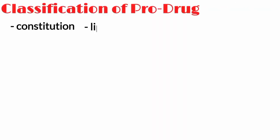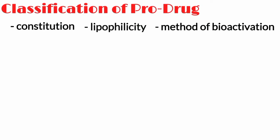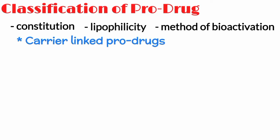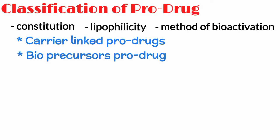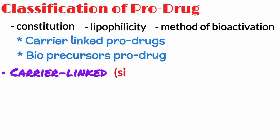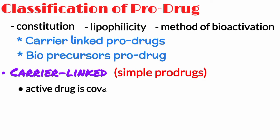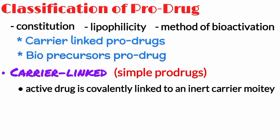Depending on the constitution, lipophilicity, and method of bio-activation, pro-drugs are classified into two main categories: number one is carrier-linked pro-drugs, and number two is bioprecursors. Carrier-linked pro-drugs, or simple pro-drugs, are the ones where the active drug is covalently linked to an inert carrier or transport moiety.